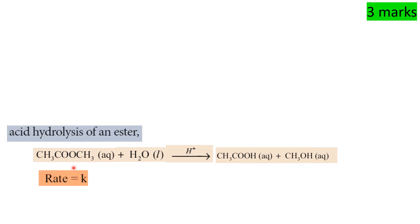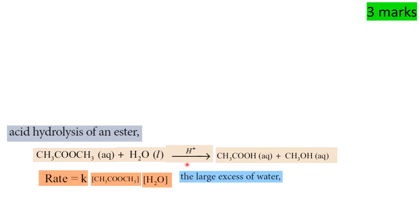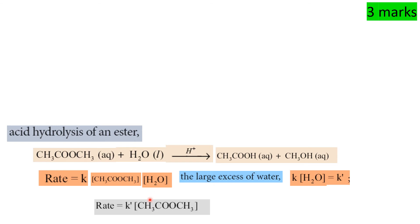Rate equals K into [ester][H2O]. Since there is a large excess of water, the concentration of water does not change. So the rate becomes rate equals K' into [ester], where K' equals K times [H2O]. Originally second order, but because water is in large excess it becomes effectively first order.